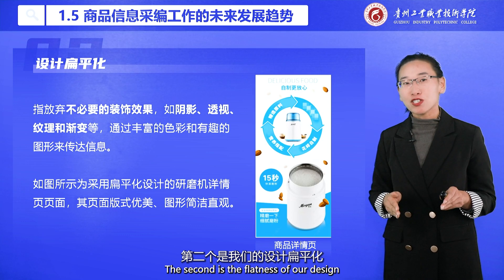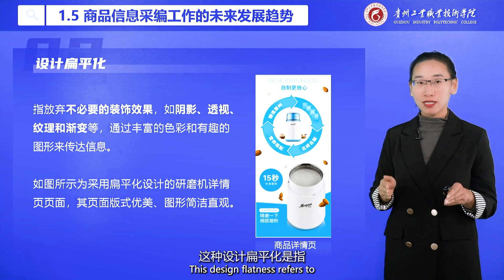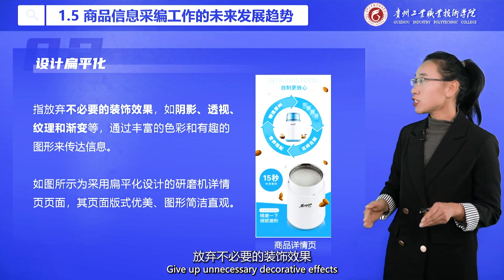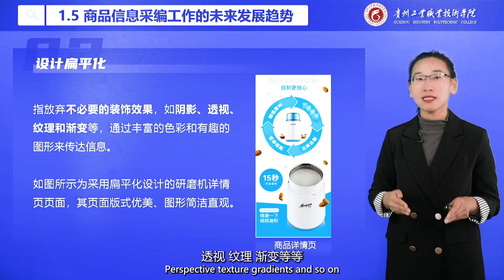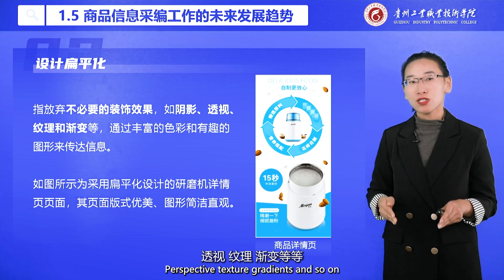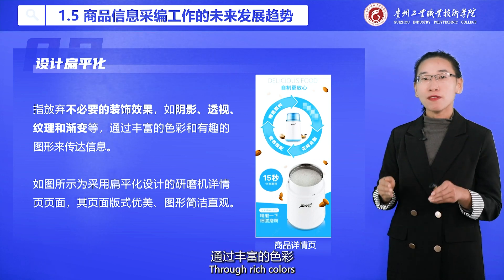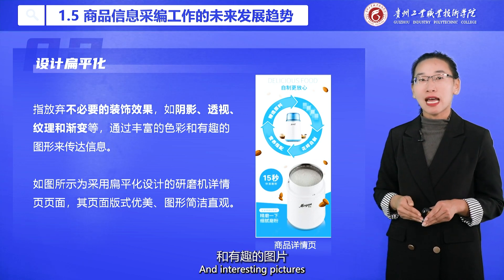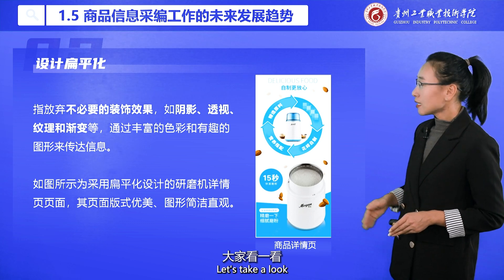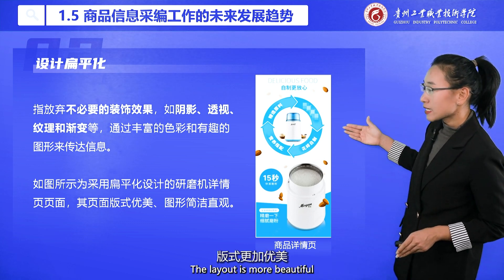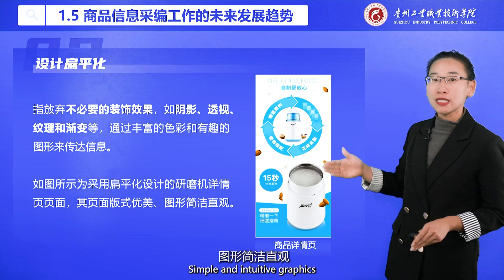The second trend is the flatness of design. Design flatness refers to giving up unnecessary decorative effects, such as shadows, perspective texture, and gradients, and instead using rich colors and interesting pictures to convey a message. This results in a layout that is more beautiful, simple, and uses intuitive graphics.